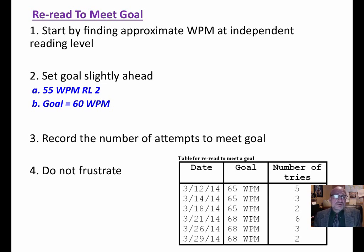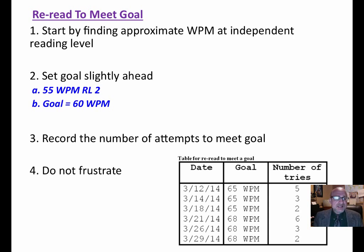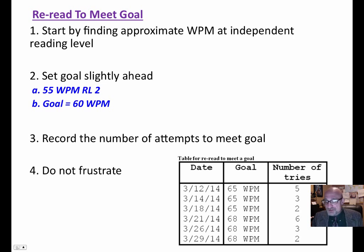Another method is reread to meet goal. You start by finding their approximate words per minute at the independent reading level, then set a goal just slightly ahead. If they're reading 55 words per minute, set the goal at 60. You record the number of attempts it takes them to reach that goal — for example, the goal is 65 words per minute, it took five times one day, three times another day. It's a positive way to show growth. Do not frustrate your students.